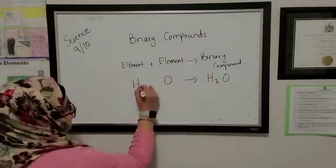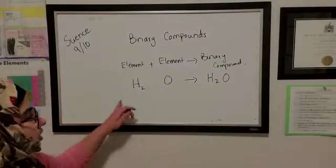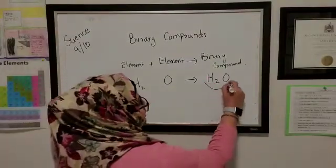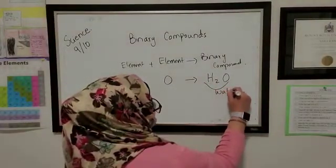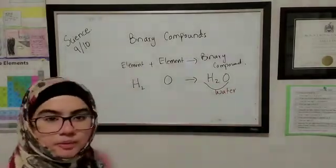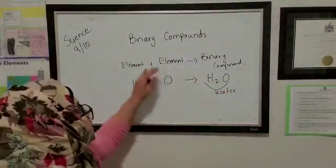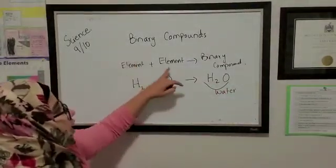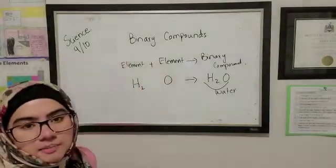So if you have two atoms of hydrogen, this compound is a well-known compound, which is a chemical formula for water, H2O. So binary compounds, when only two elements combine, they form a binary compound.